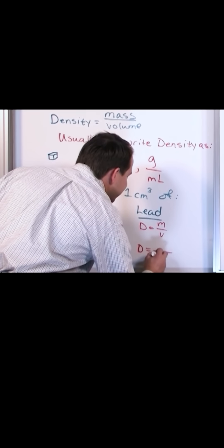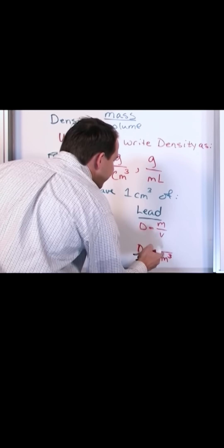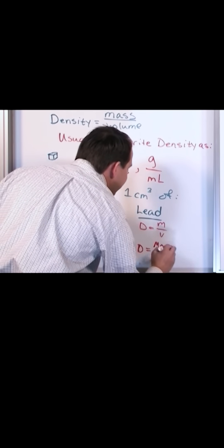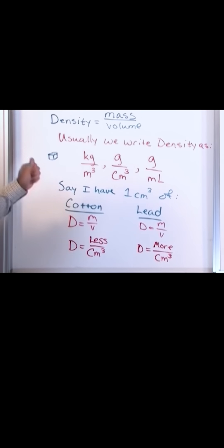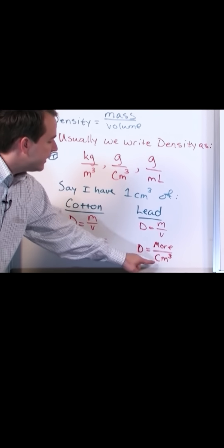So over here, if I have the same volume, I'm going to have more mass. If I have one cubic centimeter, the same volume of cotton and the same volume of lead, the volume is represented here in the bottom. There's an implied one out here in front because it's one cubic centimeter in each case.